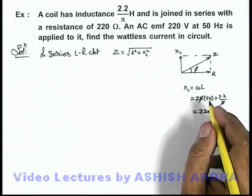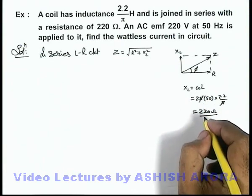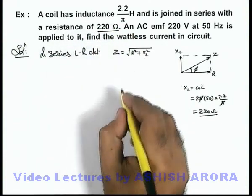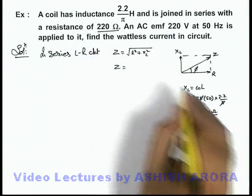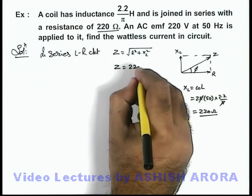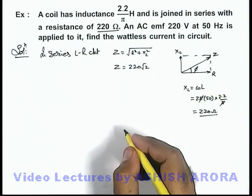Here you can see the value of inductive reactance and resistance is equal, so the value of Z in this situation will be root of 220 square plus 220 square, which is 220 root 2. This is the circuit impedance.